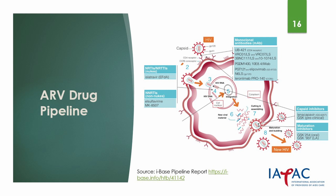Lenacapavir is being studied in the Capella trial, which is a phase 2-3 double-blind, placebo-controlled global multi-center study designed to evaluate the antiretroviral activity of lenacapavir administered every six months as a subcutaneous injection in heavily treatment-experienced people with multi-drug resistance. A new drug application was accepted by the US FDA in July 2022 for the use of lenacapavir in this patient group. Calibrate is a phase 2 randomized open-label active-control study evaluating the safety and efficacy of lenacapavir in combination with other antiretroviral agents in treatment-naive patients. Finally, lenacapavir is being studied for PrEP in the PURPOSE trials.